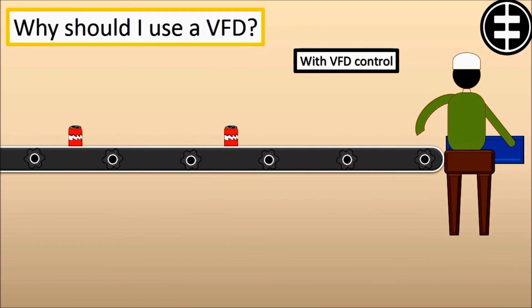On conveyors and belts, you eliminate jerks on startup allowing high throughput.